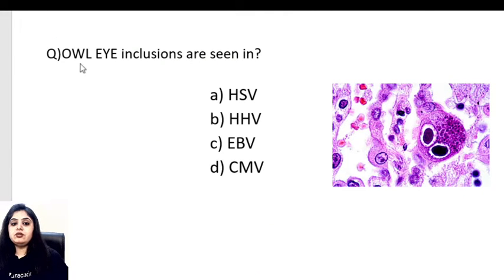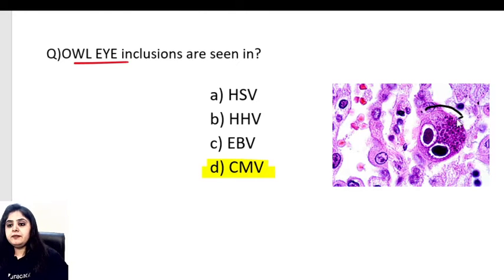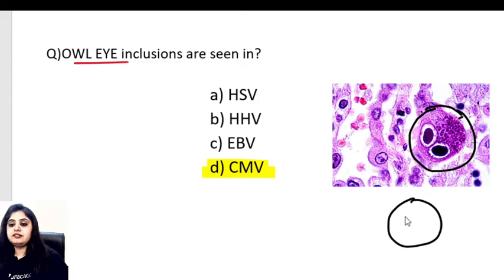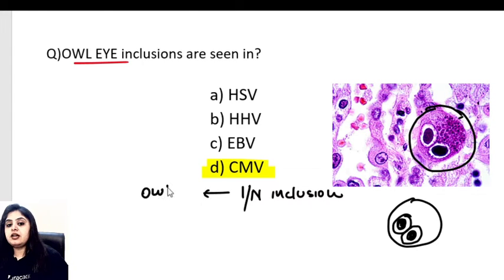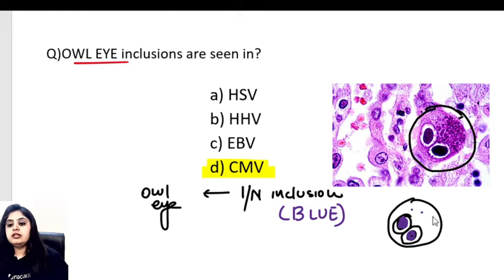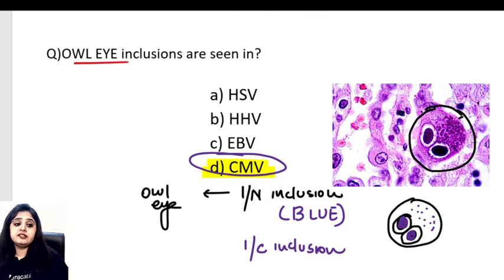For cytomegalovirus, if they tell you there's an owl eye inclusion associated with a virus, you know you're dealing with CMV. In the cell, you can see intranuclear inclusions giving the owl eye appearance, and the color of these intranuclear inclusions is blue. Apart from the intranuclear inclusions, there are also intracytoplasmic inclusions present — that is what you see in cytomegalovirus.